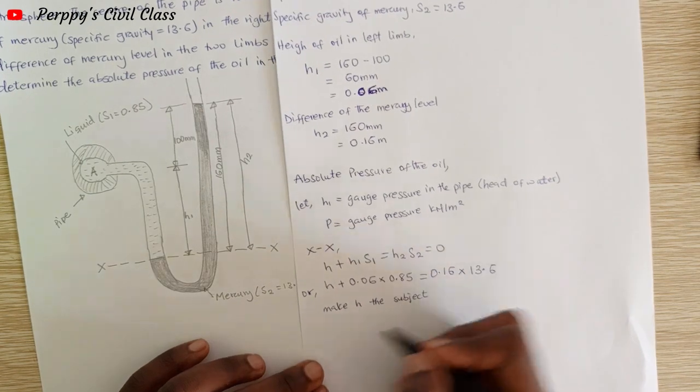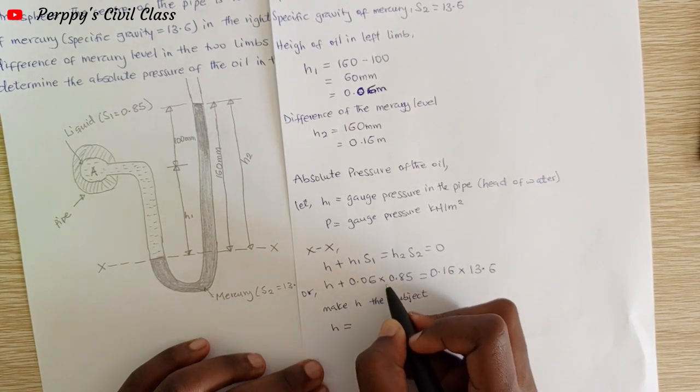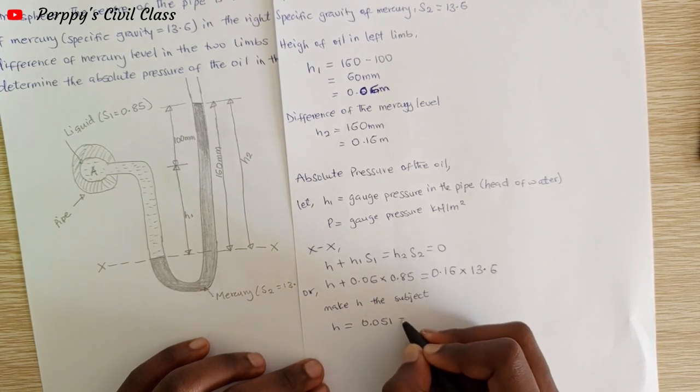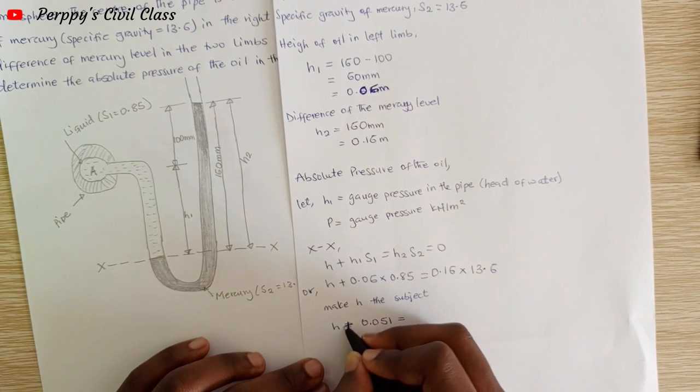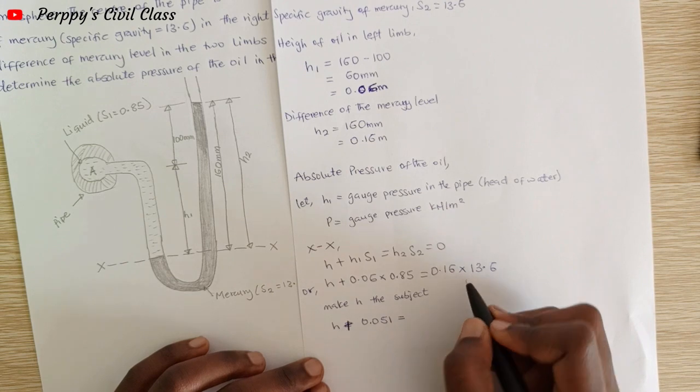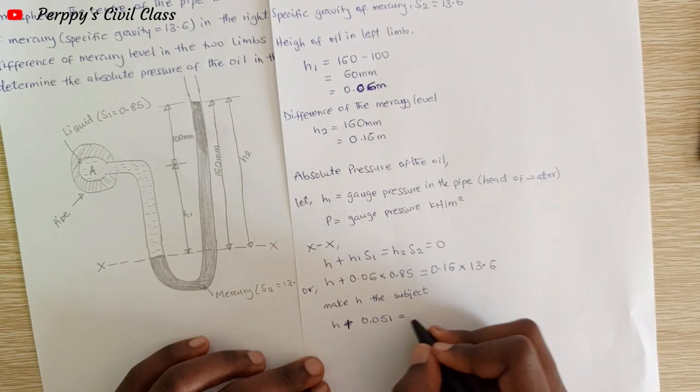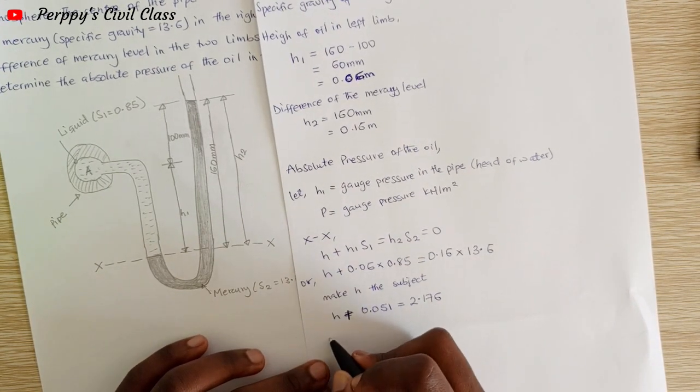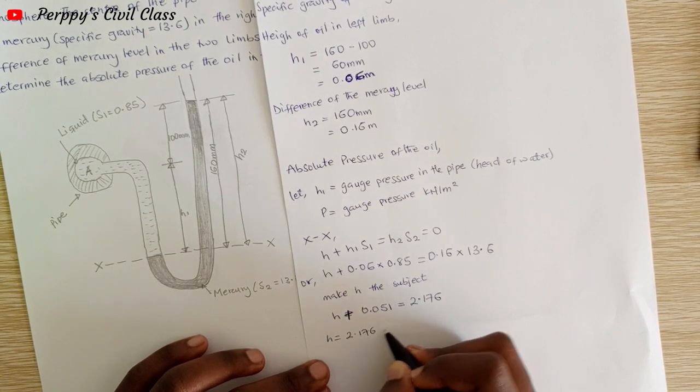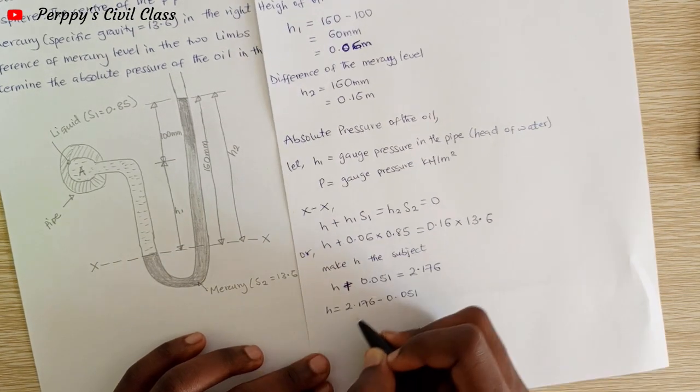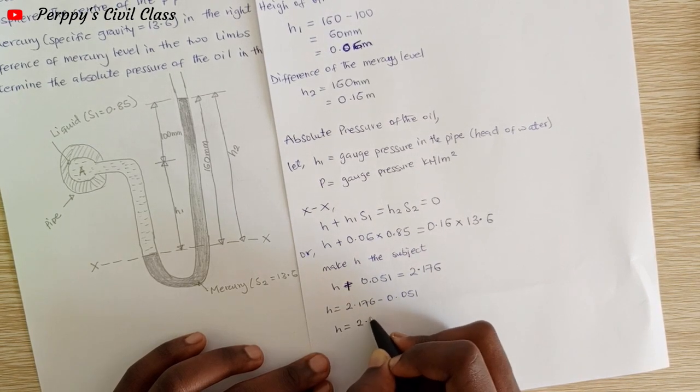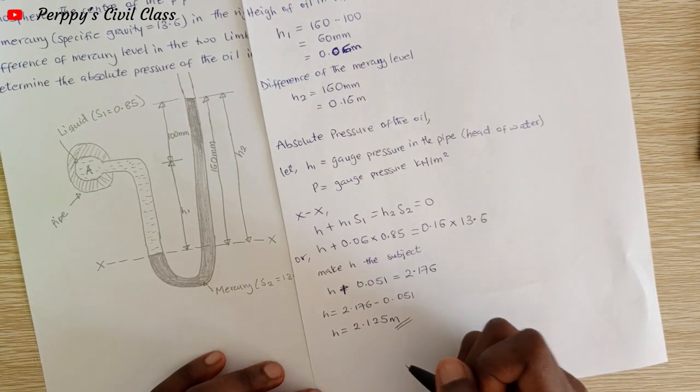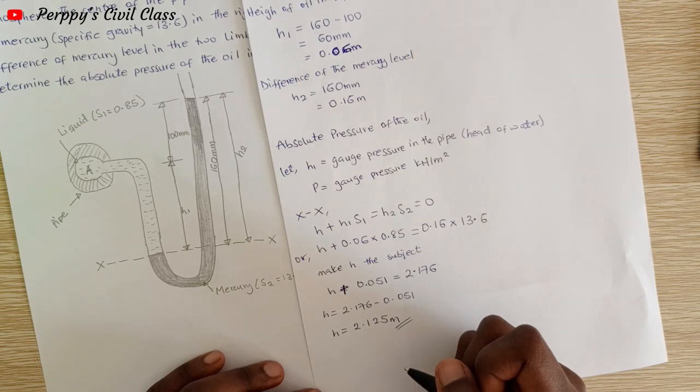So h equals 0.06 times 0.85, we have 0.051, plus 0.16 multiplied by 13.6, we have 2.176. Making h the subject: h equals 2.176 minus 0.051. H becomes 2.125 meters. Now we know our h, we have to find the pressure.